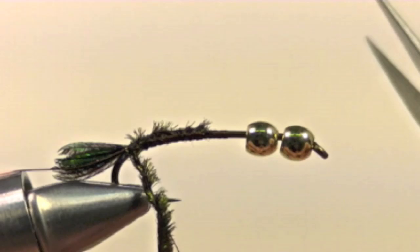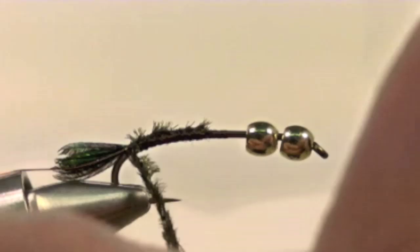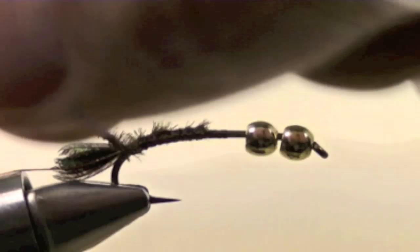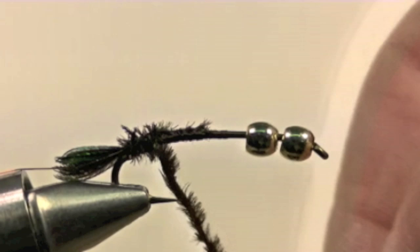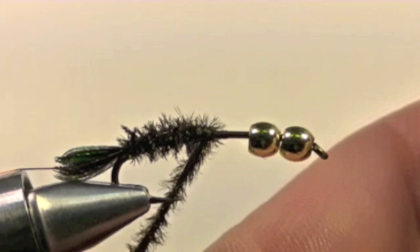Now we will take the peacock hurl and twist them around the thread going counterclockwise. As we wrap this forward, these will stay more tightly woven with the thread, making a more durable fly. Wrap these forward to about the mid shank and tie them off.